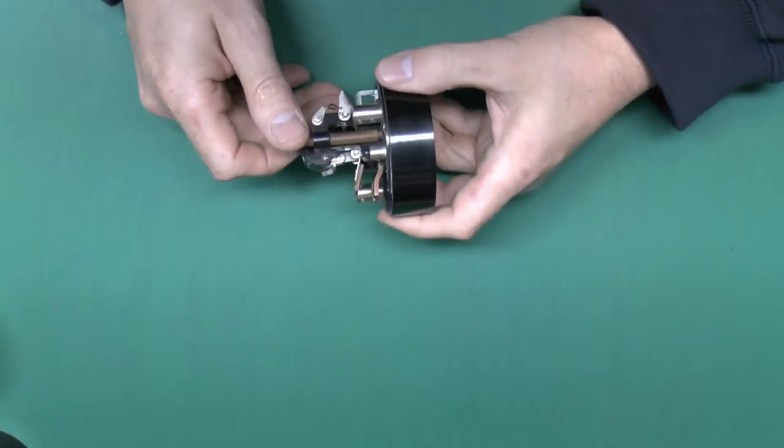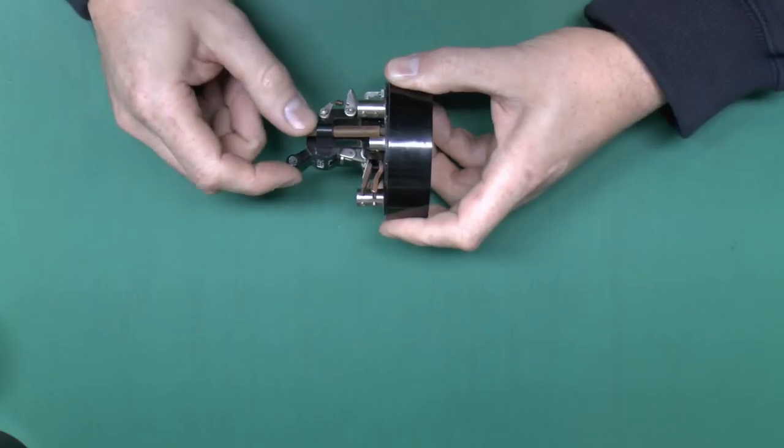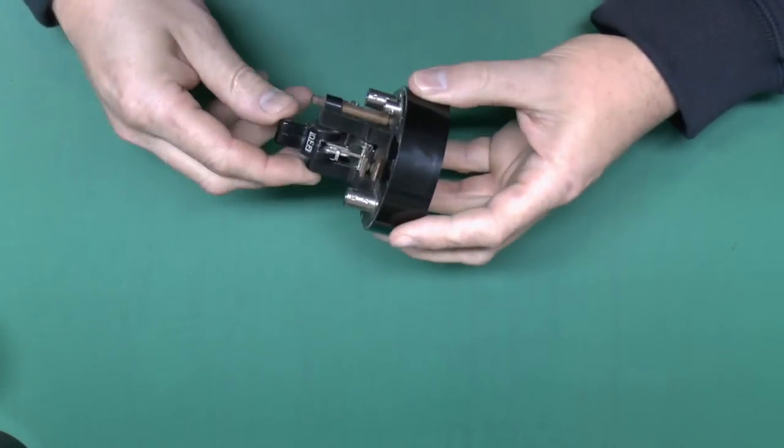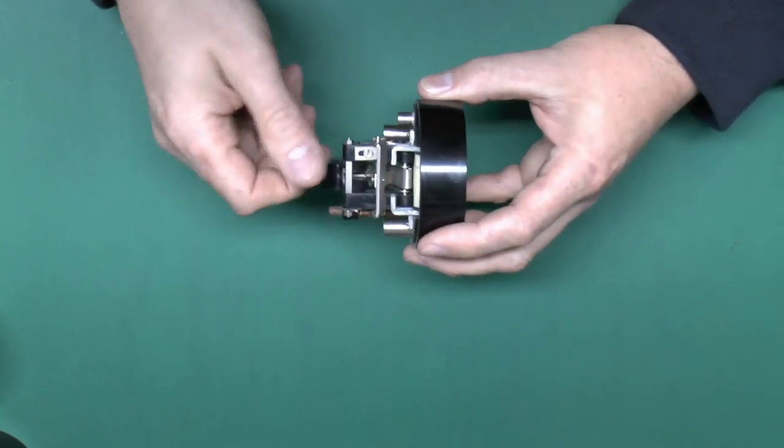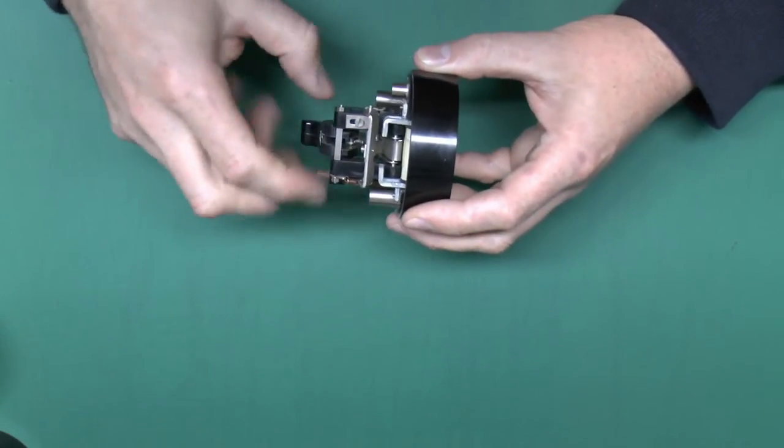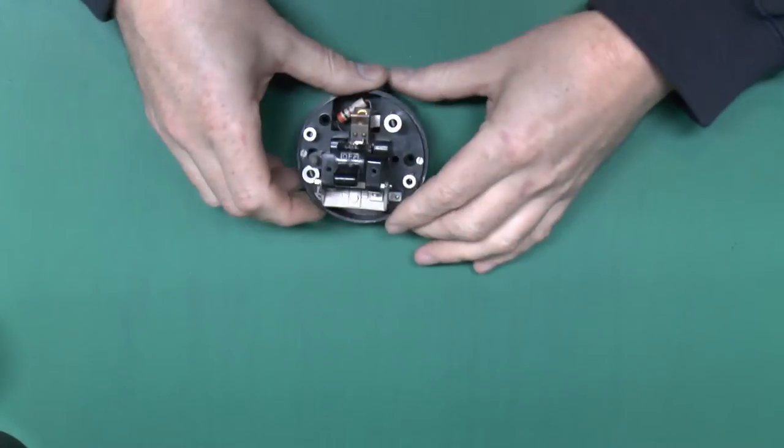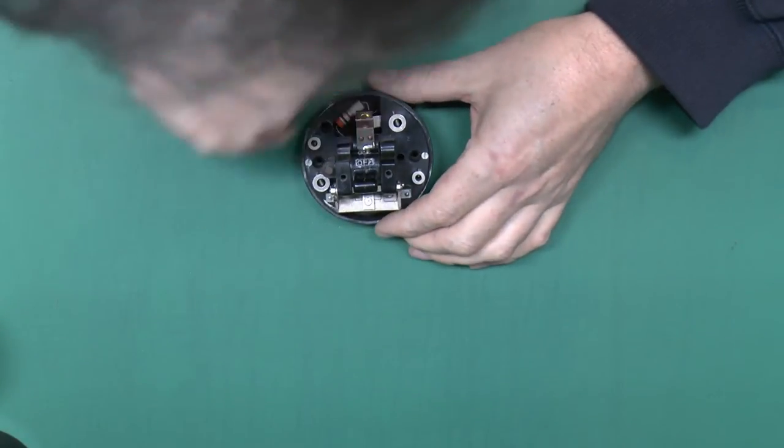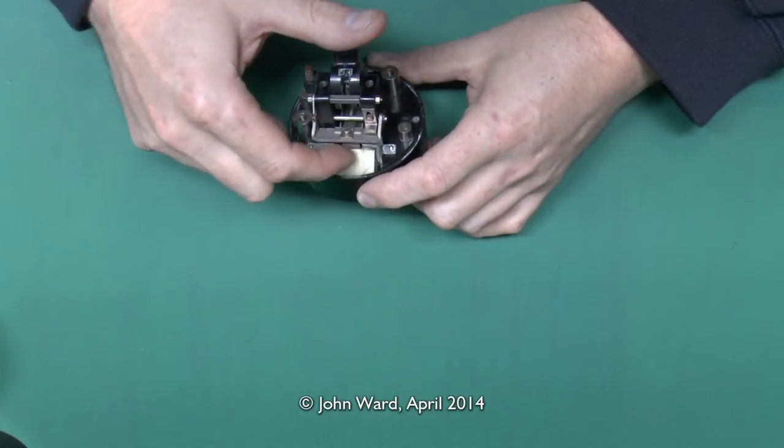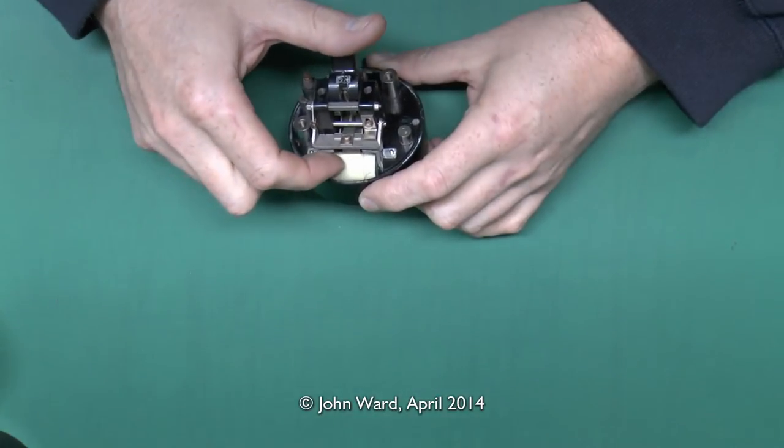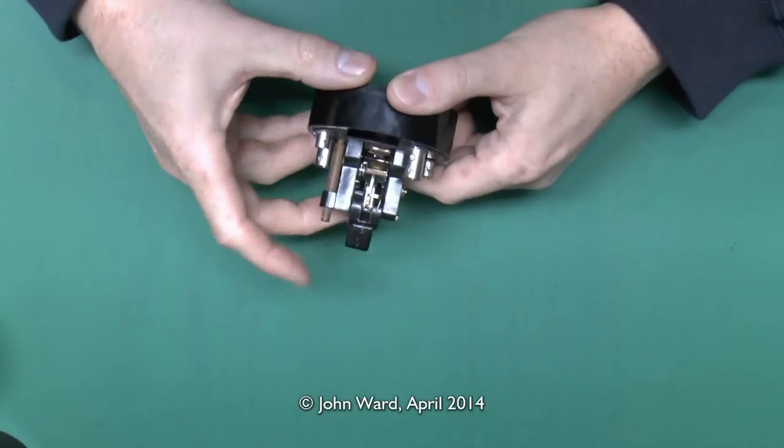Now this is only a single pole device and we can see the main contact there. So it just presses together like that and then when it trips off it just springs apart. One interesting aspect of these is they have to be operated in the correct vertical position because if you put it this way up you can't actually reset the thing because it relies on gravity to move the various parts into the correct position. So main switch on the front there just the contact. There's a resistor in the back there and at the bottom here you can see there's a coil.